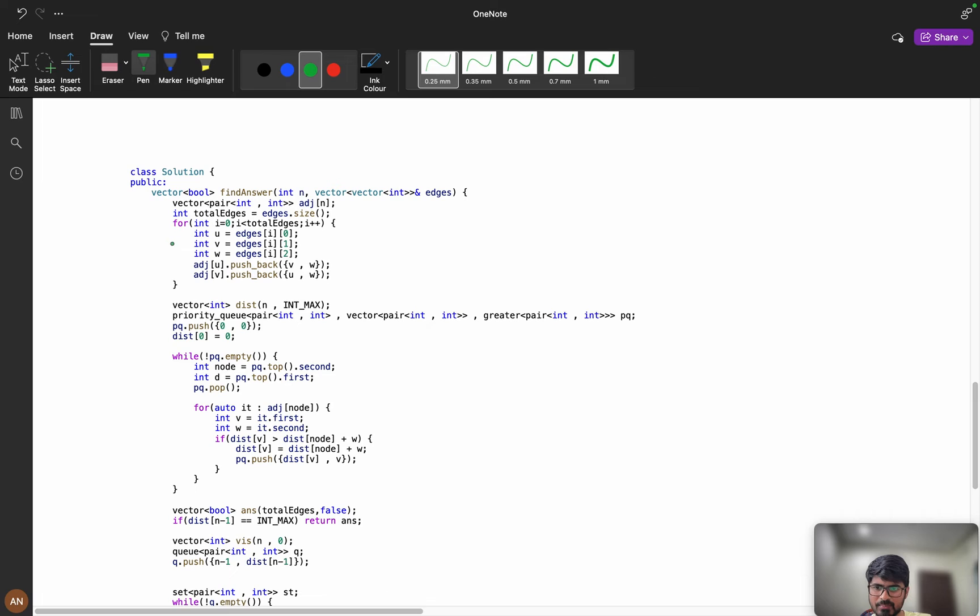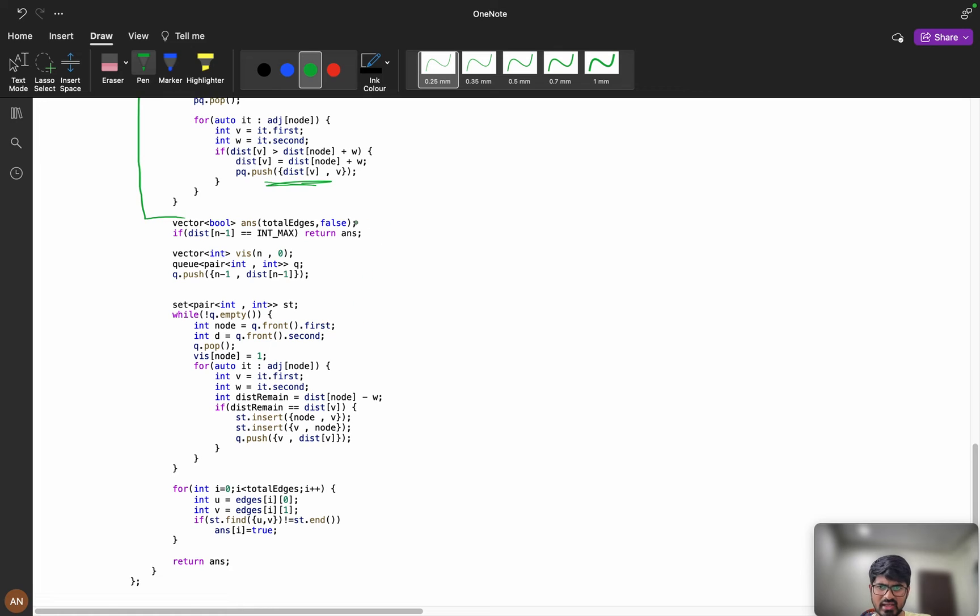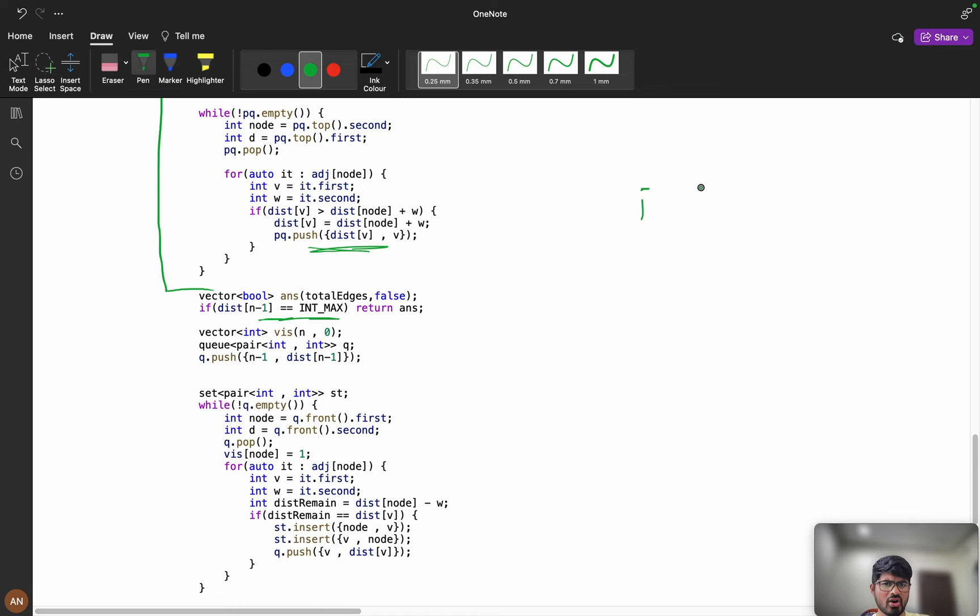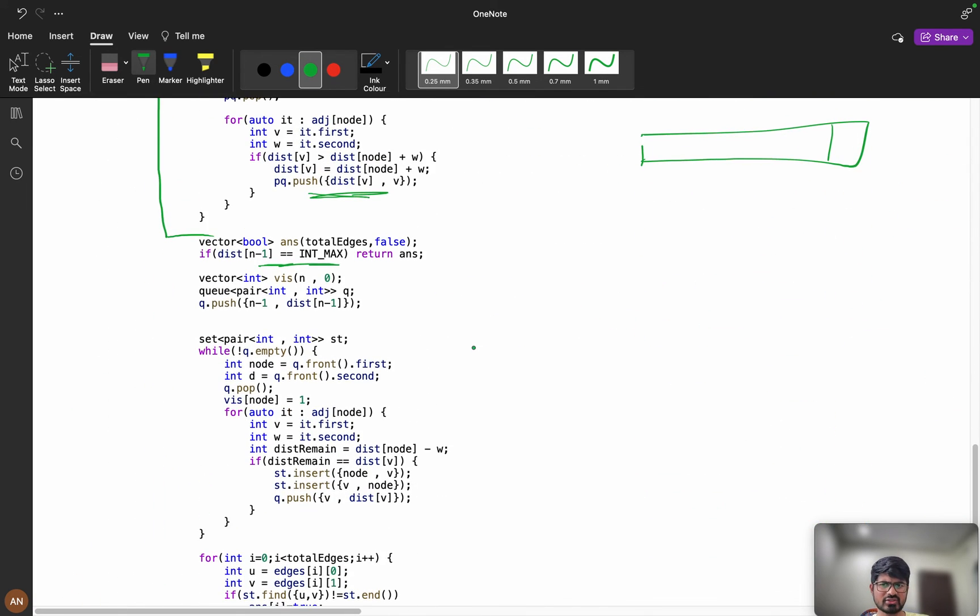Now it is simple. This is my complete Dijkstra algorithm. Dijkstra's algorithm is first we are storing u, v, w, and we are using priority queue and we are getting the Dijkstra algorithm. And if my distance of n minus 1 equals to int max, that means we cannot reach to the destination because sometimes it may fail. Note that the graph may not be connected. If it is not connected, source and destination is not connected, then I can say I cannot reach the destination, so it will be like int max. I will return the answer.